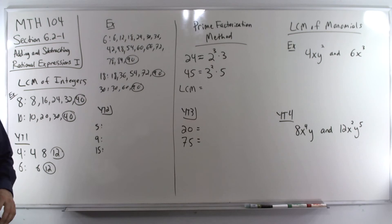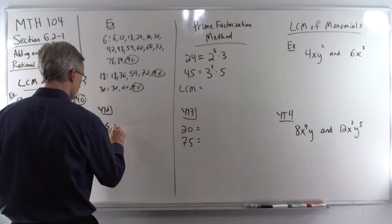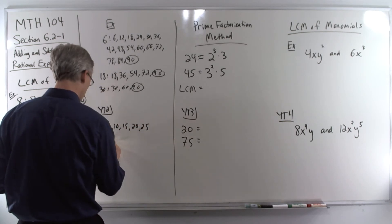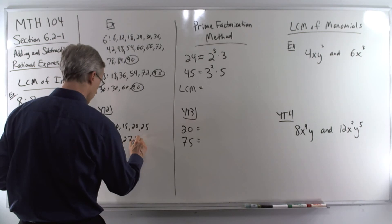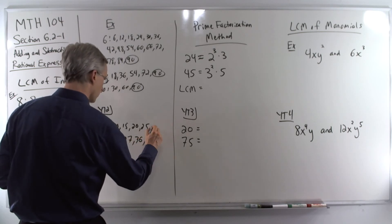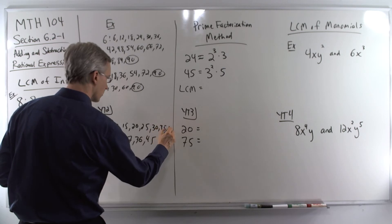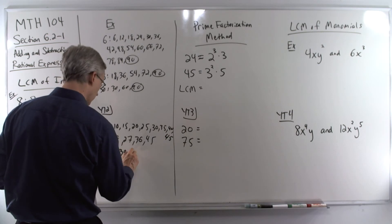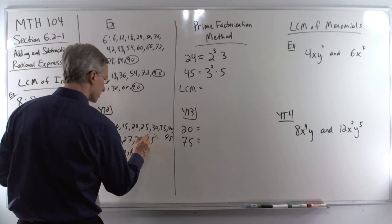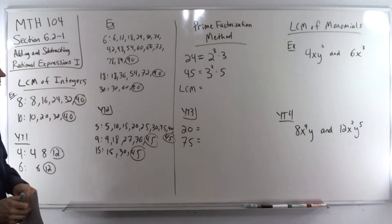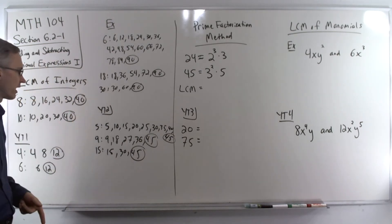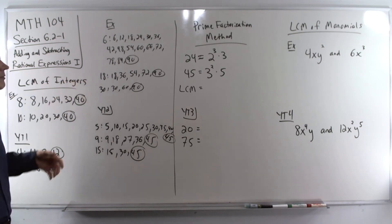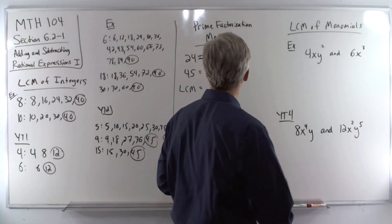We'll give it one more go here. Your turn, number two. The LCM of 5, 9, and 15 is 45. So as the numbers get bigger, this method becomes a little ridiculous. It's great for small numbers, though — it's really quick and easy.